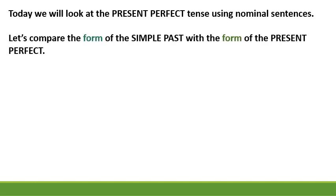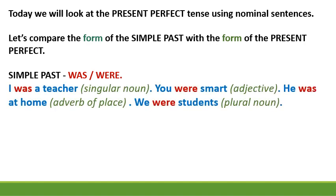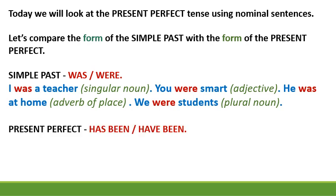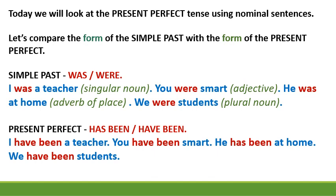Let's compare the form of the simple past with the form of the present perfect. The simple past uses was or were: I was a teacher. You were smart. He was at home. We were students. The present perfect uses has been or have been: I have been a teacher. You have been smart. He has been at home. We have been students.